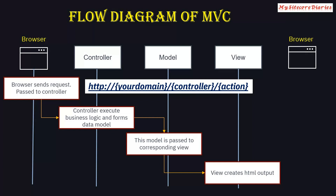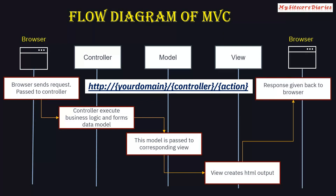Which view to execute is also decided by the controller. So the controller does two things: first it creates the model, and then it passes that model to the appropriate view. The view creates the HTML output, and that HTML output is given back to the browser which displays it. Unlike Web Forms where we have the page lifecycle, in MVC the flow is: browser sends request to controller, controller executes the action and creates the model, decides which view needs to be displayed, model is passed to the view, view creates the HTML, and that HTML is given back to the browser.